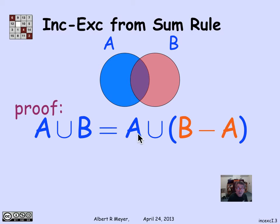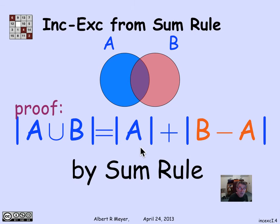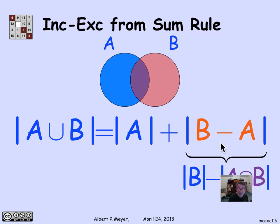That means that I know the size of this is just the size of A plus the size of B minus A, because they're disjoint. So we conclude by the sum rule that the size of A union B is equal to the size of A plus the size of B minus A. So now I need a little lemma that says that the size of B minus A is the size of B minus the size of A intersection B. If I get that, then I've proved inclusion-exclusion because now I have A plus B minus A intersection B. So we need a lemma.